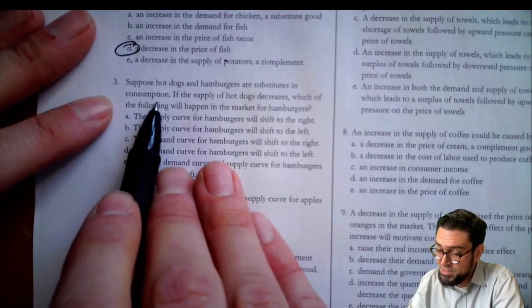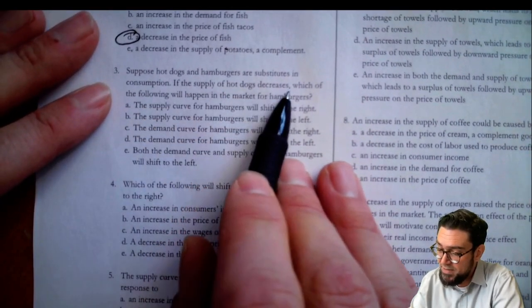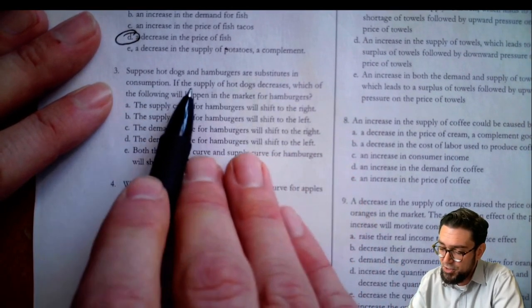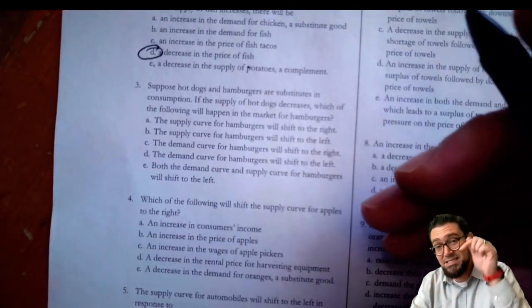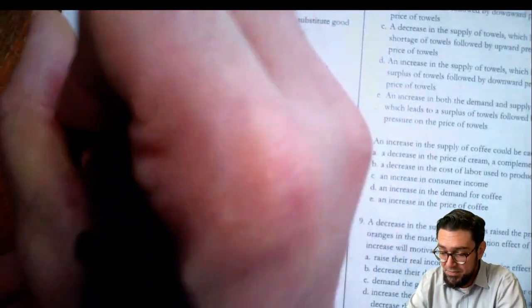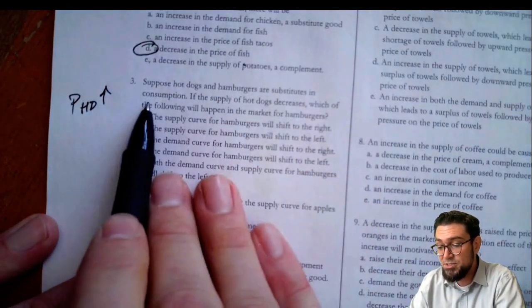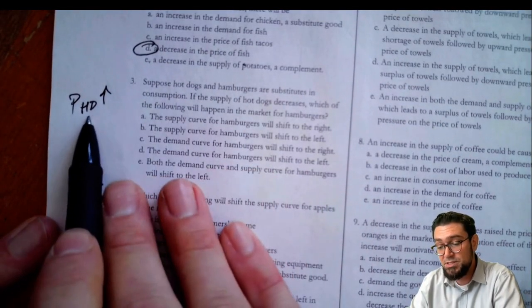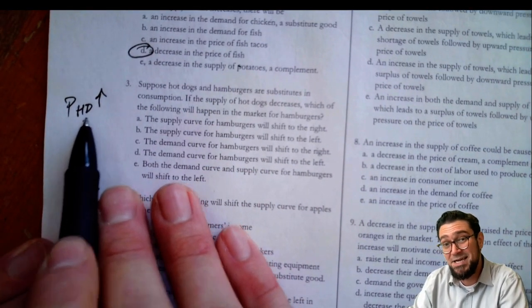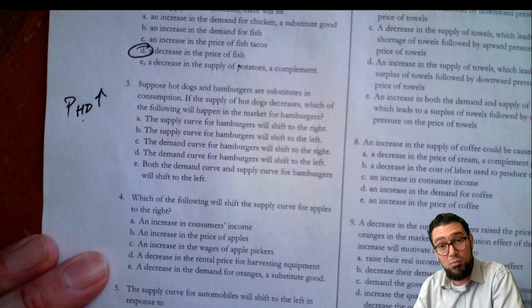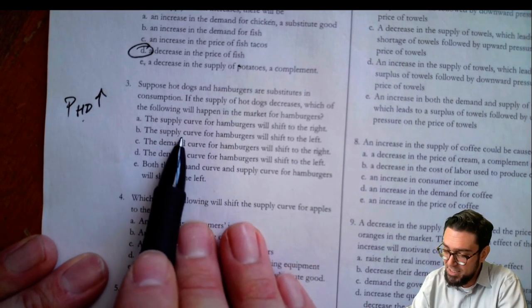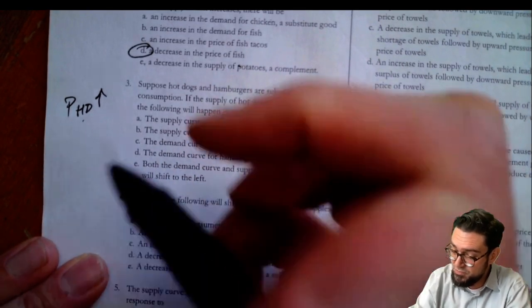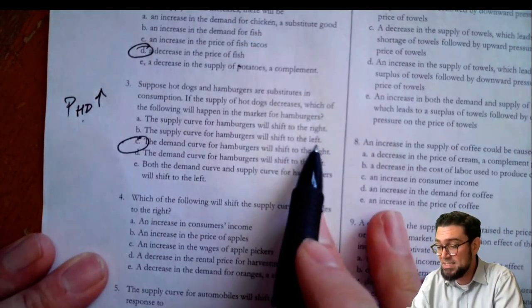Suppose hot dogs and hamburgers are substitutes in consumption, and the supply of hot dogs decreases. What happens to the market for hamburgers? If the supply of hot dogs is decreasing, the price of hot dogs is going to rise. Since they're substitutes, people are going to demand more hamburgers. Looking for that answer — demand for hamburgers shifts to the right. That's the correct answer, C, because the price of hot dogs is going up and they're substitute goods.